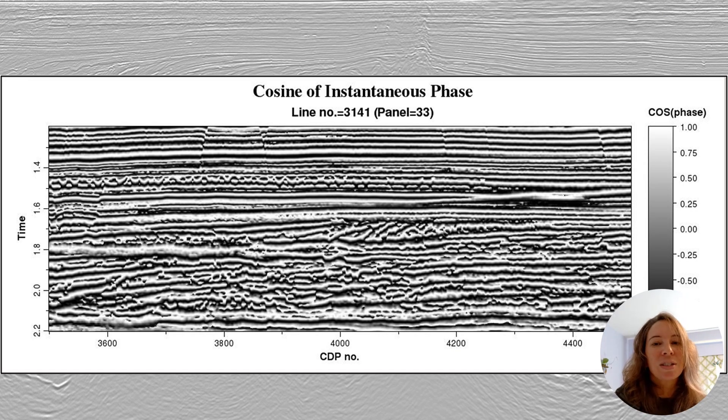The cosine of instantaneous phase is a really great seismic attribute that normalizes the seismic trace while preserving polarity information, making it easier to track seismic events. It provides better continuity visualization than the raw phase values and avoids the sharp transition where the phase wraps around from negative 180 to positive 180.